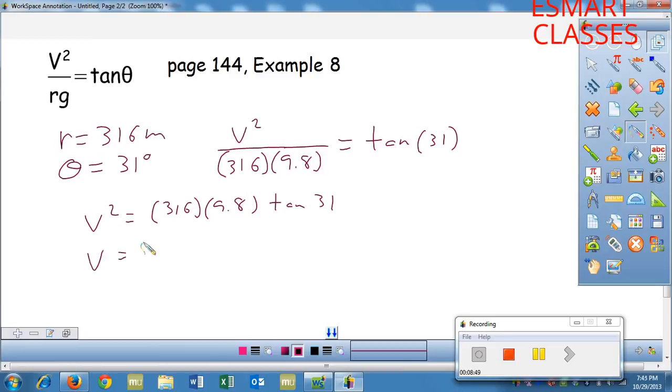That means that v equals the square root of 316 times 9.8 times the tangent of 31.